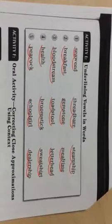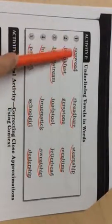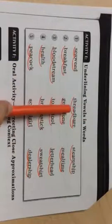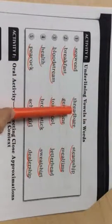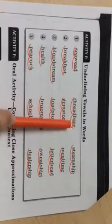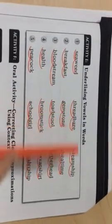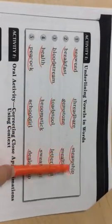Seaweed. When I see EA, I know it can go E or F. So thread bear or threed bear? The word is thread bear. Steamship or stem ship? The word is steamship.